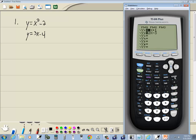Well, if I go to y equals, if I have something on y1, I'll press clear, and then I'll down arrow, press clear on y2 if you have something there. We're going to put our first equation on y1, second equation on y2. So we're going to have x squared minus 2, down arrow, and then I'll put in 3x minus 4.